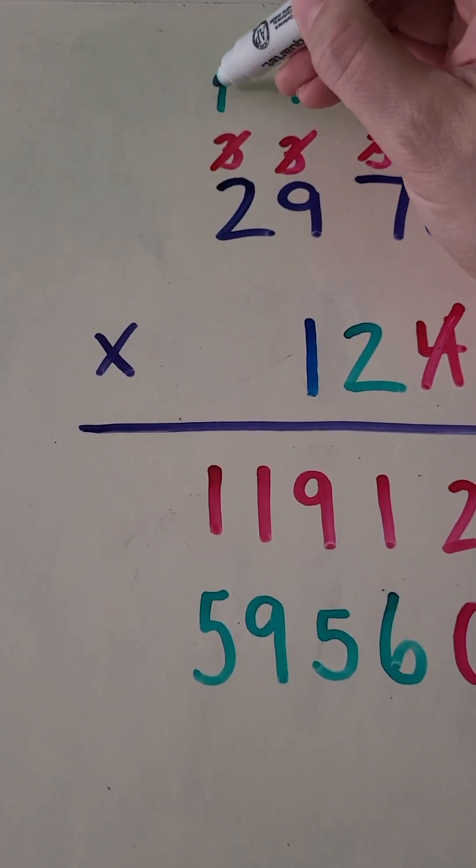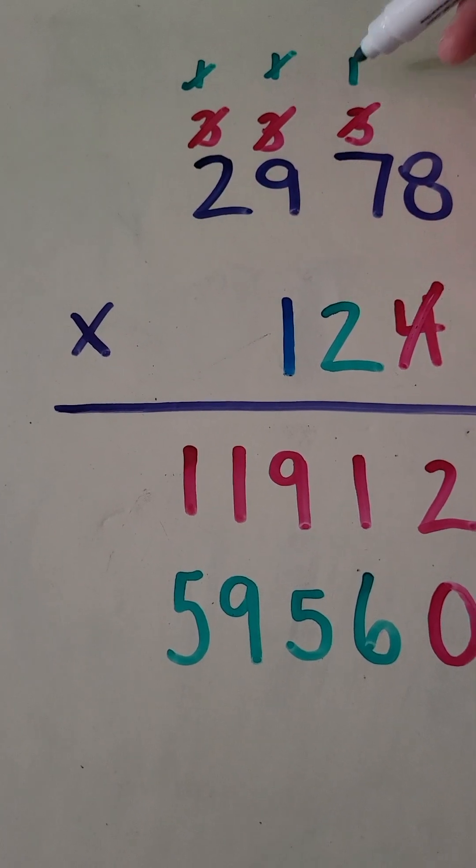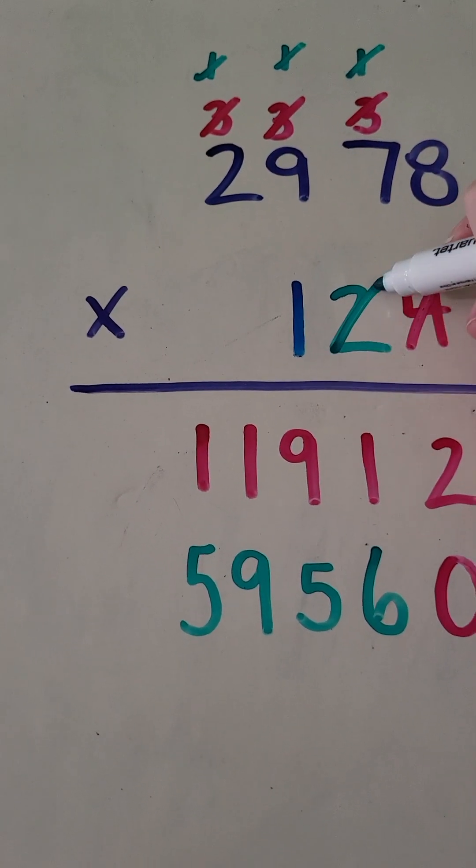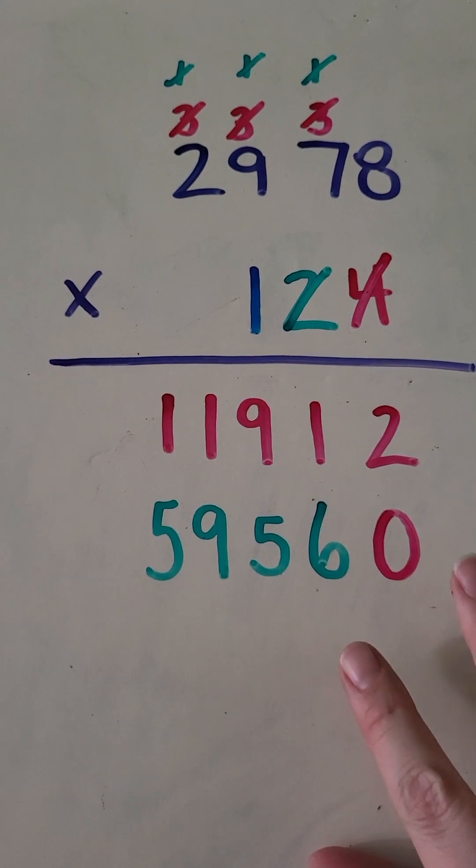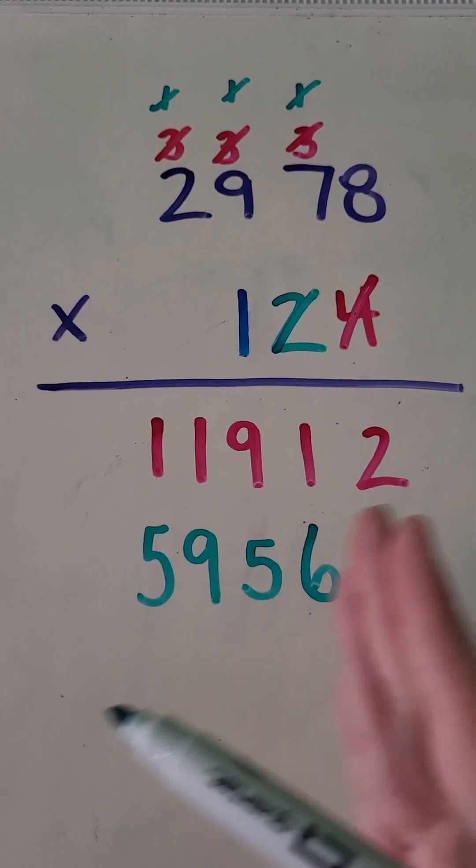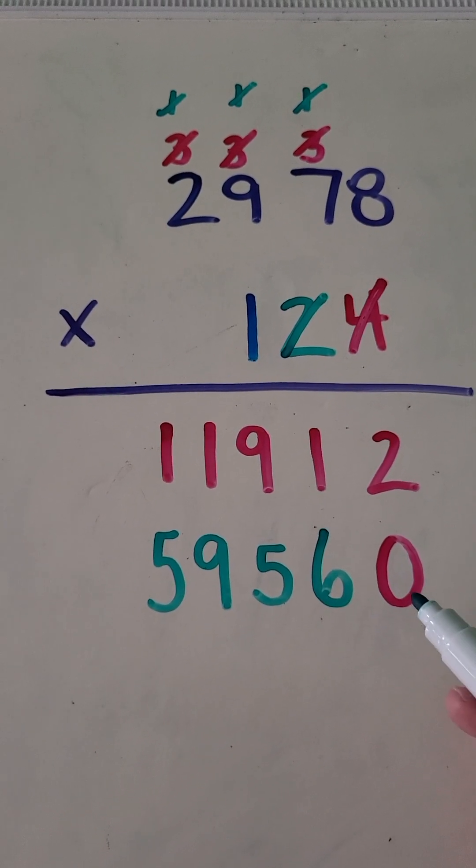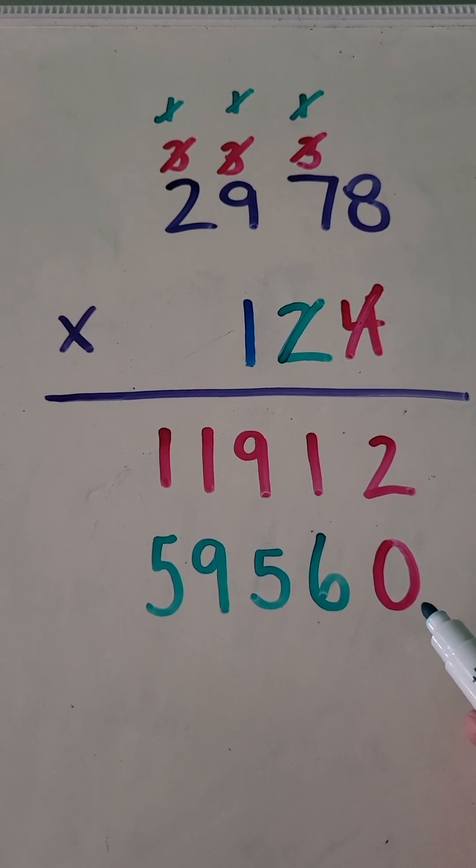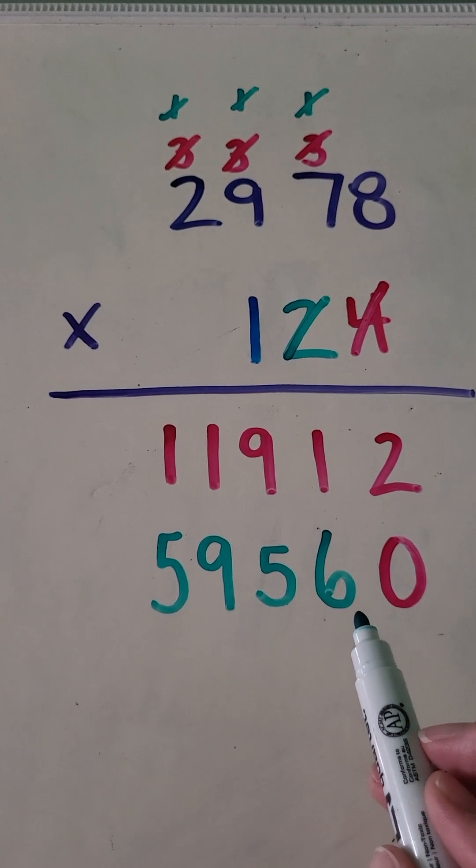All right. So now we just did our top number multiplied by two in the tens place. Let's do the same thing. We're finished working with these, finished working with these. And here's where a lot of people get mixed up. But keep in mind that we're just doing the same thing over and over again, right?